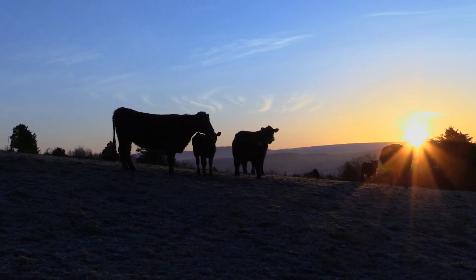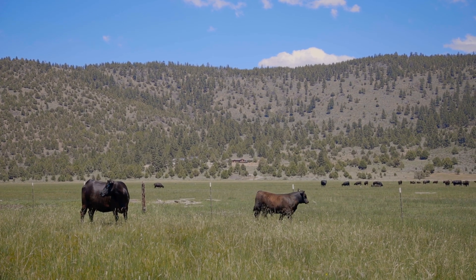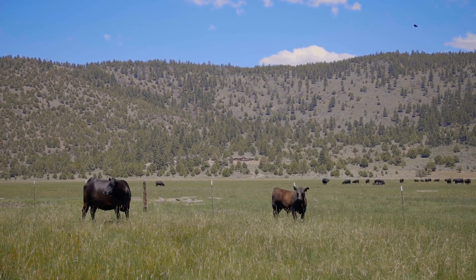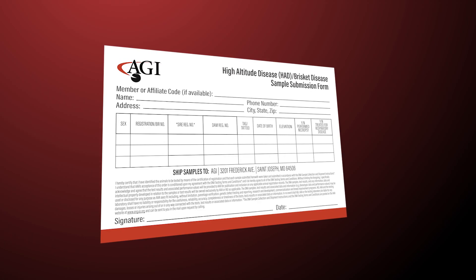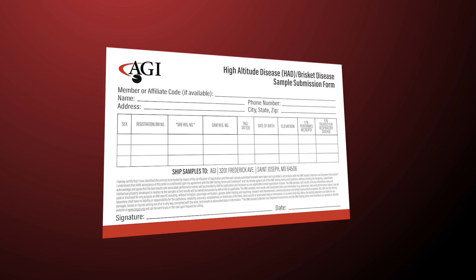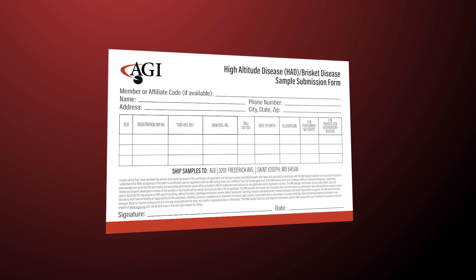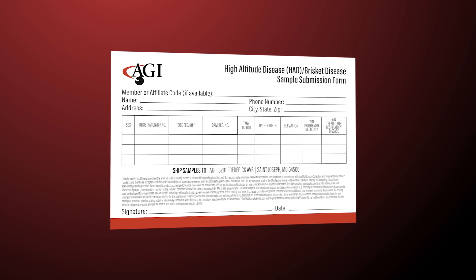What we need from our breeders is if they could send in DNA samples on animals that have either died from high altitude disease or have had chronic symptoms, so we can learn more about this disease and hopefully come up with a better solution for all breeders living at high elevations. To do that, we have a specific form you can fill out with information including sire, dam information, birth date, sex, and whether or not the animal has been treated for things like respiratory disease.